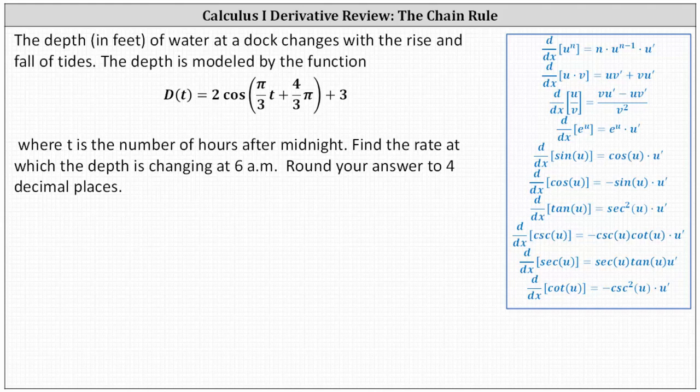In order to find the rate at which the depth is changing, we need to determine the derivative function d prime of t. Notice d of t is a composite function where the inner function is pi divided by three times t plus four-thirds pi. Let's identify the inner function as u.